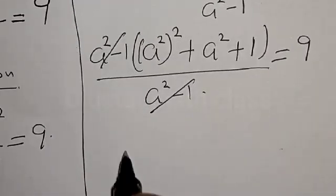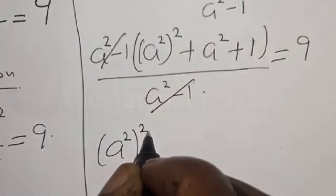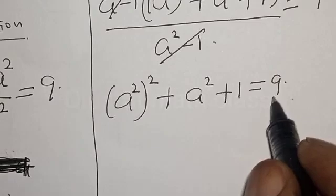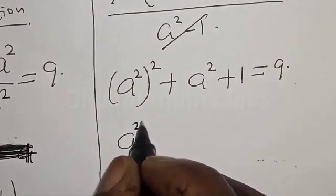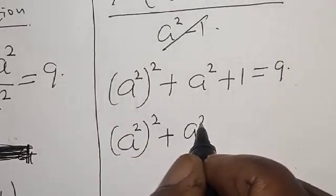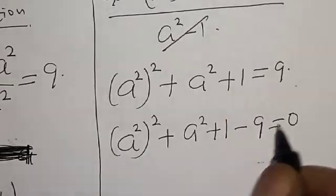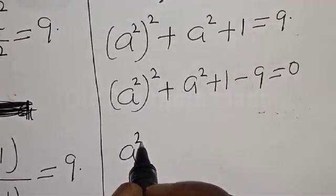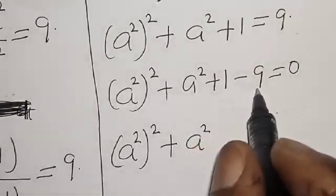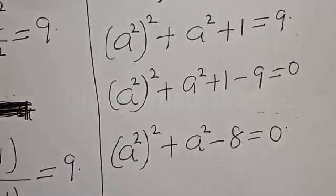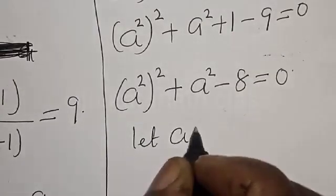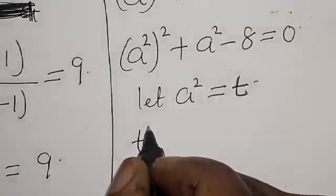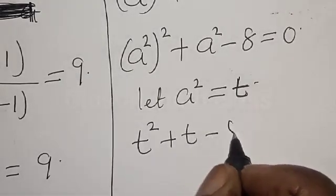We have a⁴ + a² + 1 = 9. Let's equate everything to zero: a⁴ + a² + 1 - 9 = 0, which gives a⁴ + a² - 8 = 0. Now let a² = t, then we have t² + t - 8 = 0.